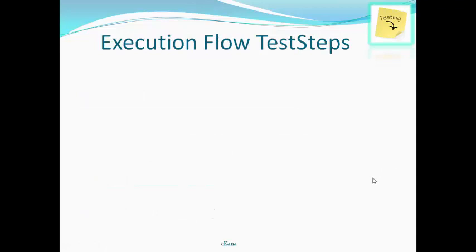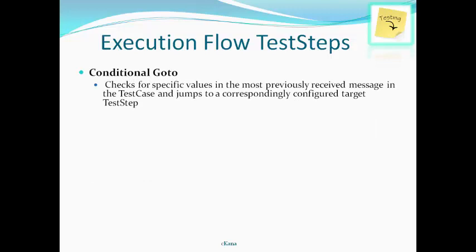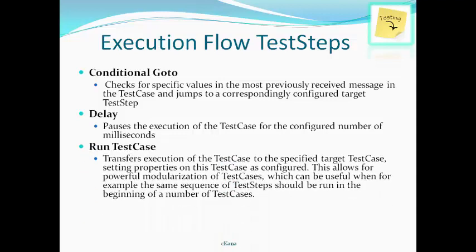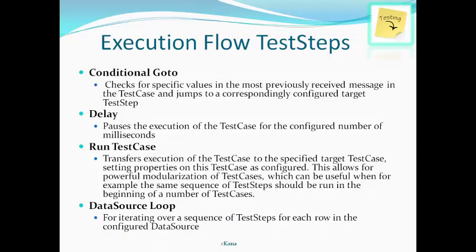Although the initial flow of test step execution is sequential, several test steps allow branching and looping. The conditional go-to test step checks for specific values in the most recently received message and jumps to a configured target test step. The delay test step pauses execution for a configured number of milliseconds. The run test case step transfers execution to a specified target test case, enabling powerful modularization. The data source loop iterates over a sequence of test steps for each row in the configured data source.